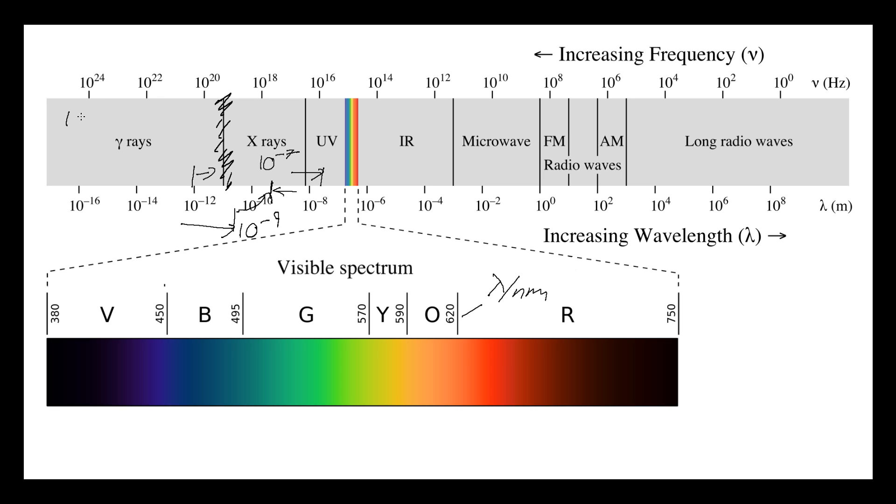So gamma, 10 to the minus 16 to 10 to the minus 9. X-rays, we've got 10 to the minus 12 to 10 to the minus 7. The UV, we go from 10 to the minus 9 down to the visible spectrum, which is here. So that's 3.7 times 10 to the minus 7, which is 370 nanometers.